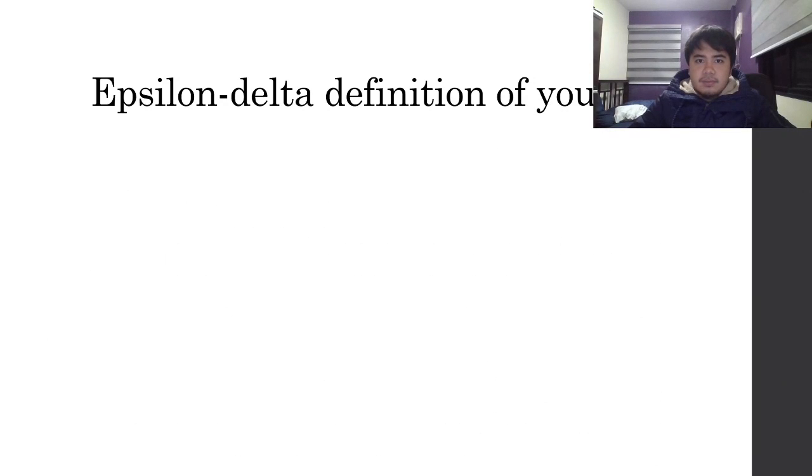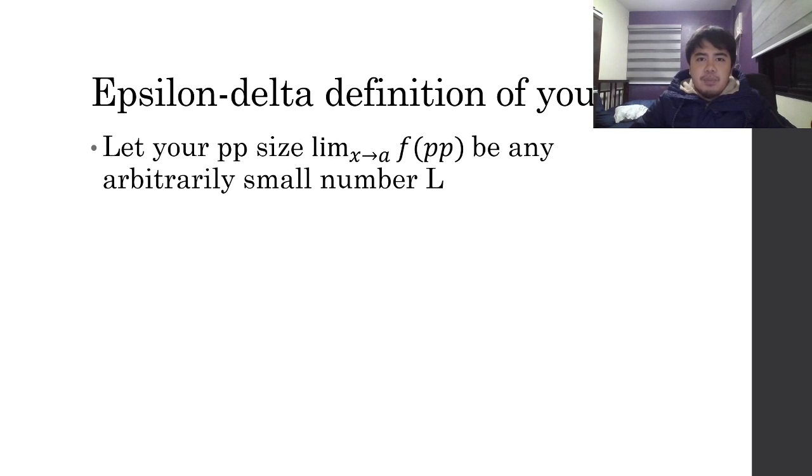Now let's talk about the epsilon-delta definition of your peepee. Let your peepee size limit as x goes to a, f(pp), be any arbitrarily small number L.